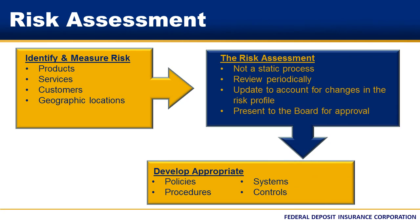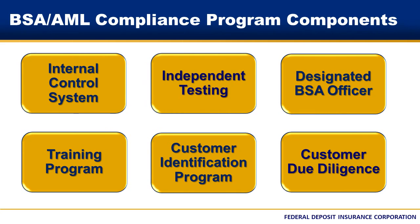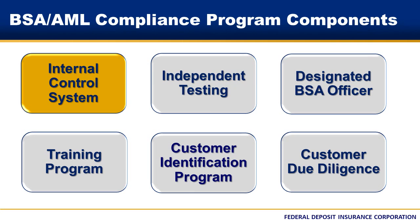As a director, you are responsible for ensuring that the bank has an effective, risk-based BSA AML compliance program. Let's discuss the key components that are required to be included in a BSA AML compliance program. The six components that every bank's BSA AML compliance program must have are: a system of internal controls, independent testing of the program's effectiveness, a designated individual to manage the program, training for appropriate personnel, an established customer identification program, and procedures for customer due diligence. For the next few minutes, we'll discuss each of these components.